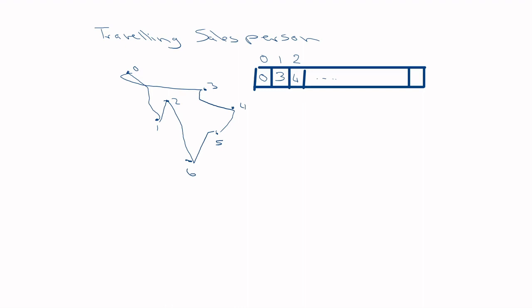For example, the array might be: zero, three, four, five, six, two, one — meaning start at zero, then go to three, four, five, six, two, one, and then return to zero. This representation gives you exactly the order in which to visit your cities. It's simple, straightforward, and works really well for the TSP.